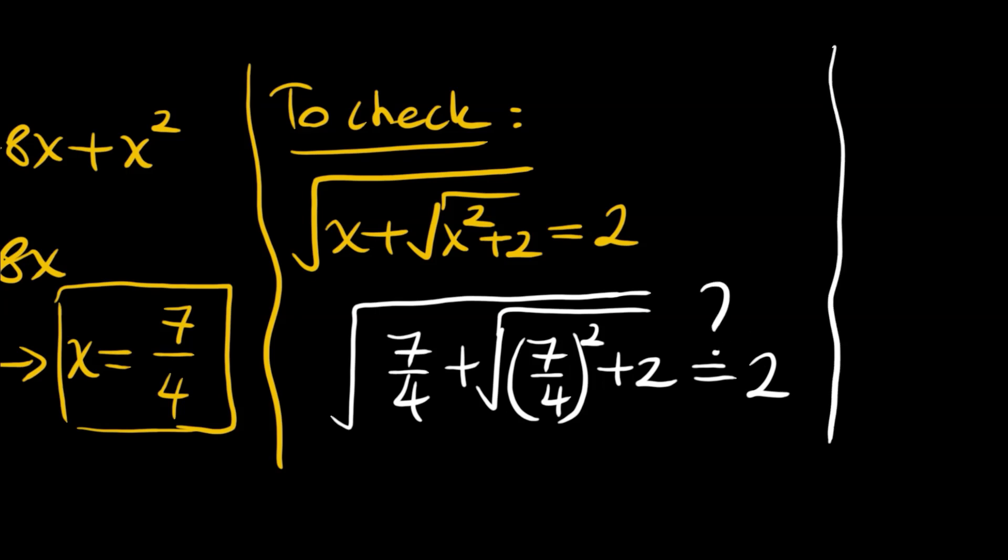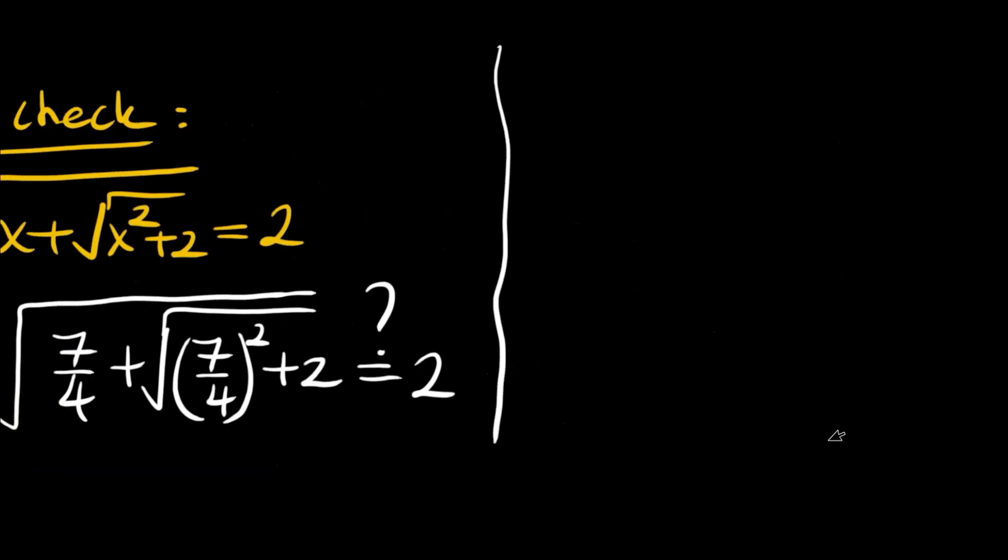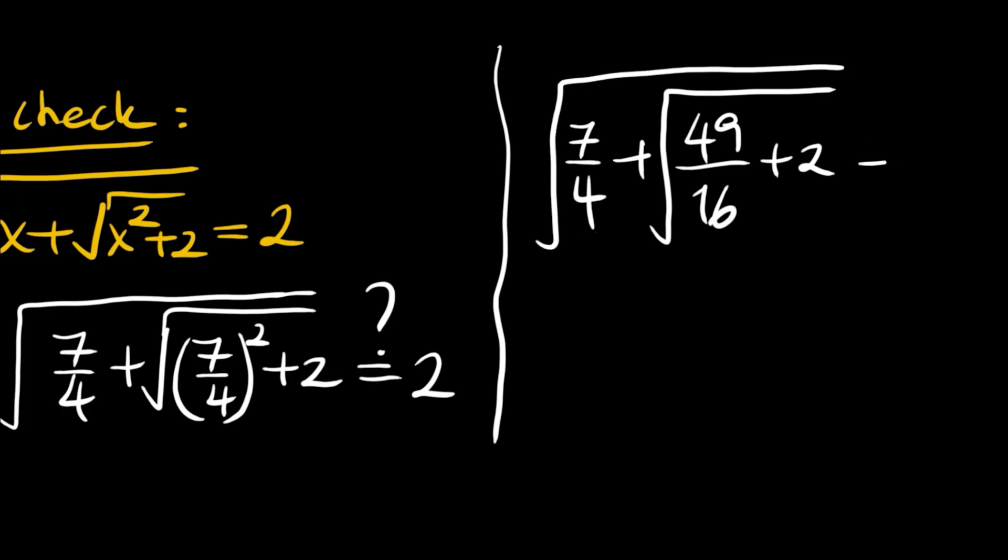Starting from the inner square root, we will have 49 divided by 16 plus 2. The square root of 7 over 4 should equal 2, as I said. Here we will have 32.